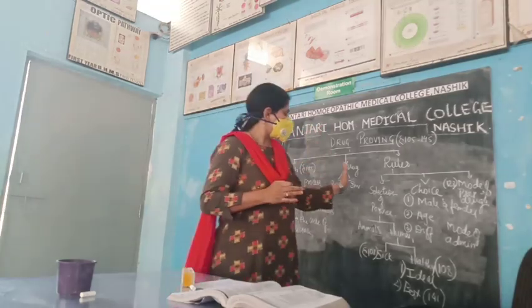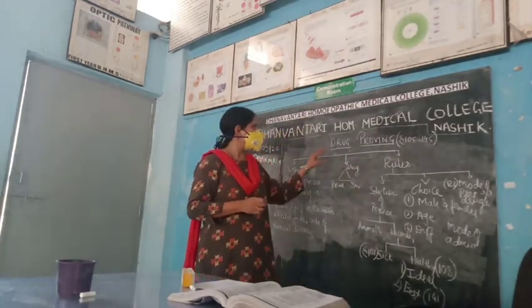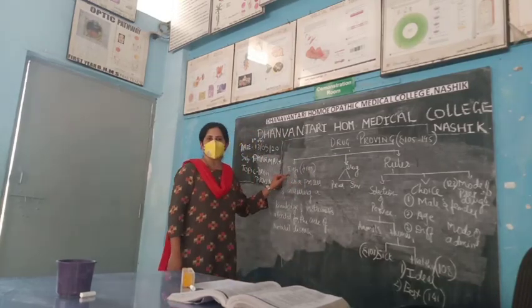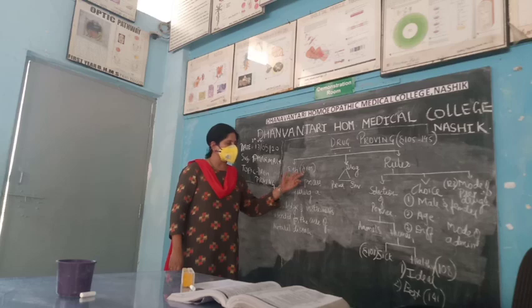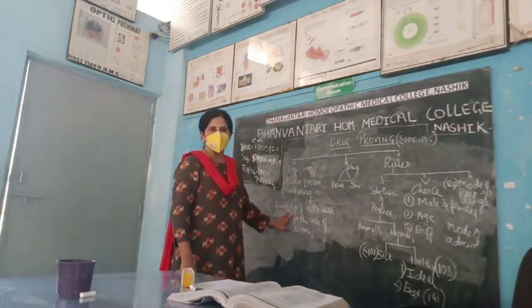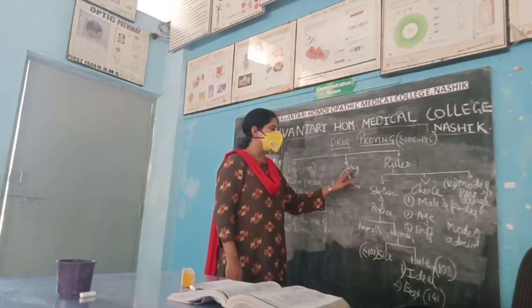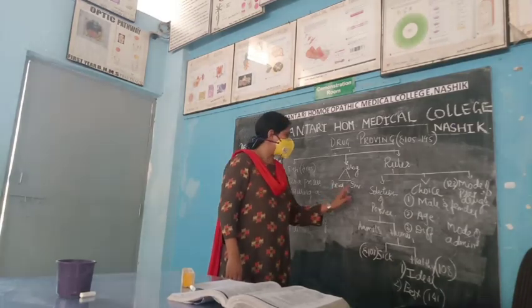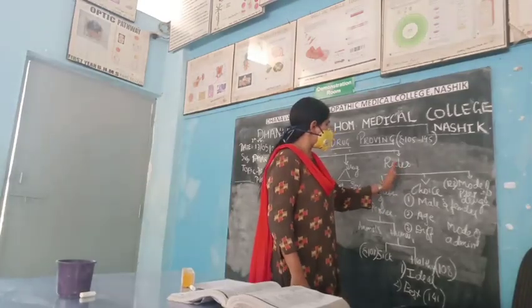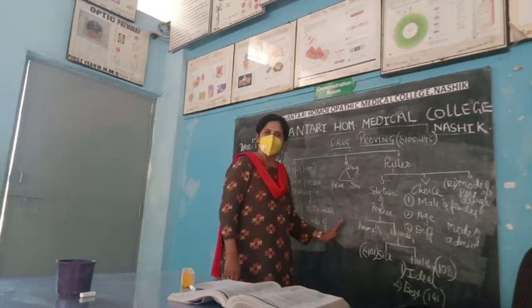In summary: drug proving is covered in aphorisms 105 to 145. The definition in aphorism 105 is acquiring knowledge of instruments for the cure of natural disease in a systematic and orderly way. Prerequisites include a genuine drug, a physically and mentally healthy prover, and a stress-free environment. The first rule is selection of prover — animals are not used in homeopathy, only human beings. In human beings, sick people are not taken, only healthy people.